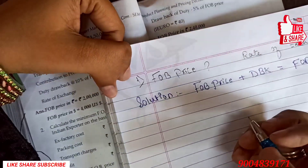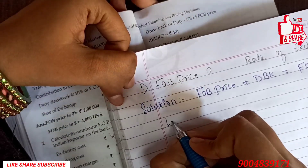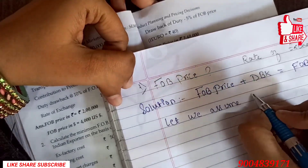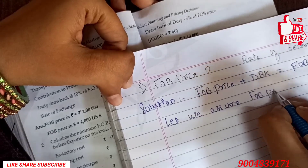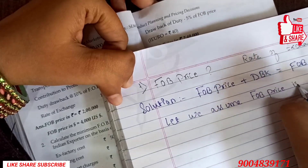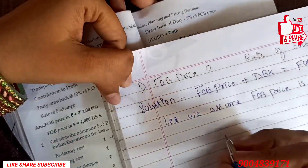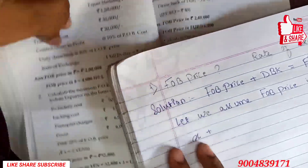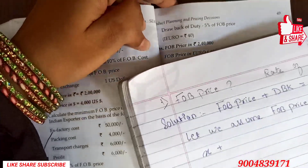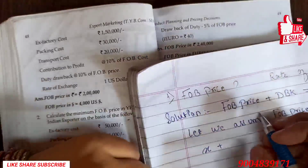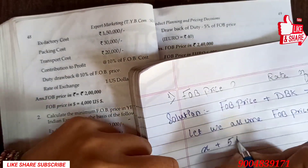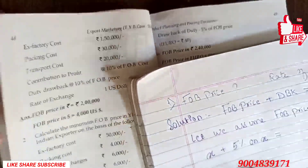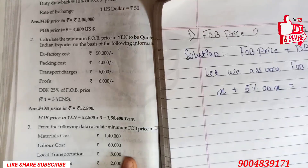We will calculate FOB price. We assume FOB price is X. We put it in the formula: X plus DBK — as given in the question, 5% of FOB price — so 5% on X is equal to FOB cost. The expenses given are: 1,40,000 plus 60,000 plus 8,000 plus 2,000.